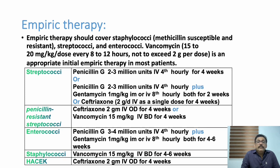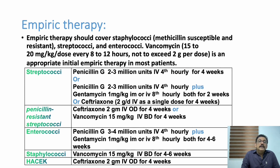For enterococcal endocarditis, use Penicillin plus Gentamicin, or start Vancomycin 15 mg/kg IV twice daily for 4–6 weeks if MRSA is suspected. For HACEK organisms, Ceftriaxone 2 g IV once daily for 4 weeks. In empirical therapy, most physicians prefer broad coverage: Vancomycin for gram-positive including MRSA, and Ceftriaxone for gram-negative infections.